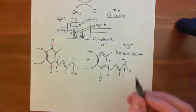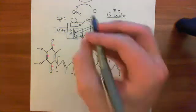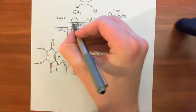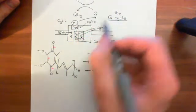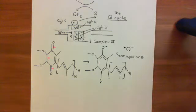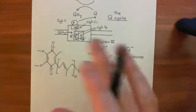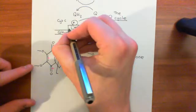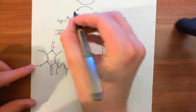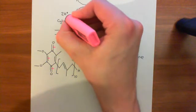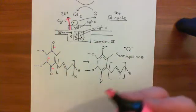This ubiquinone molecule had two electrons to give. The other electron is going to go onto cytochrome C1 of complex 3, and then cytochrome C1 will give that electron to the cytochrome C molecule, which lurks within the intermembrane space. It will later give that electron to complex 4. Additionally, ubiquinol doesn't just give two electrons away — it has to give two protons away as well. So it gives two protons into the intermembrane space. That's two protons now moved into the intermembrane space.